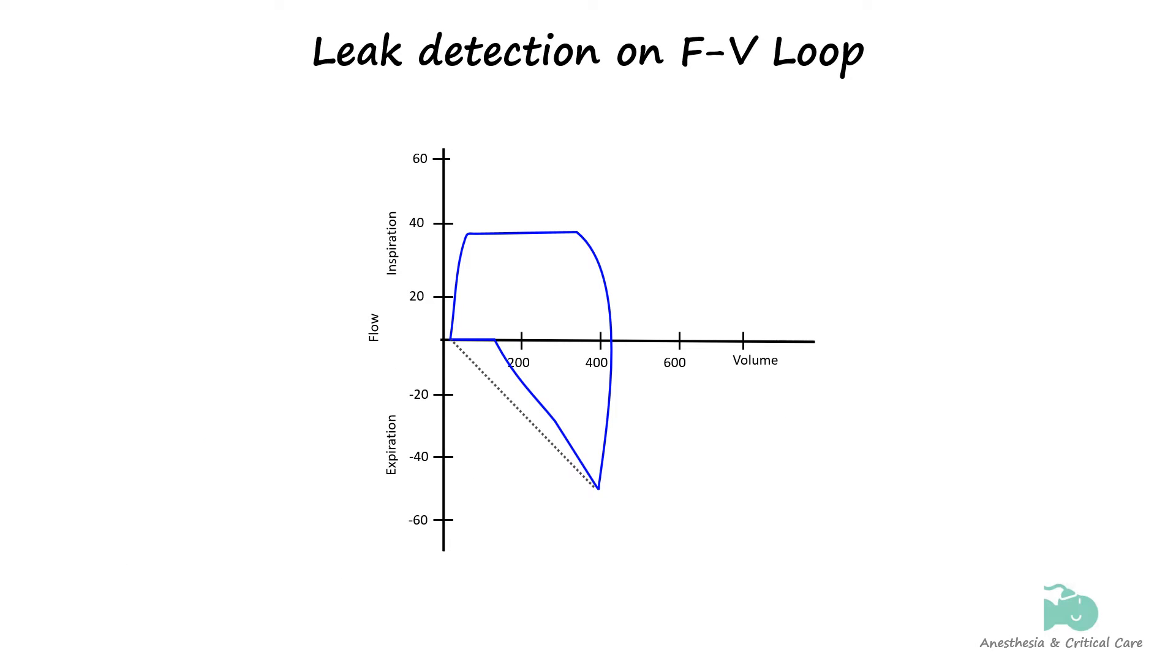When there is a leak in the circuit, the expiratory limb may not return to zero, indicating that not all inspired air is exhaled through the circuit. A significant decrease in the measured tidal volume can also indicate a leak, as some of the air escapes before reaching the patient's lungs.